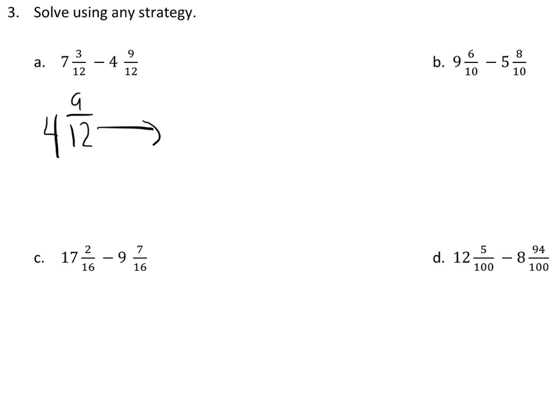So I'll start with four and nine-twelfths. And I'll go up how many-twelfths? Three-twelfths. Because nine-twelfths and three-twelfths would make twelve-twelfths, which would get me to five.